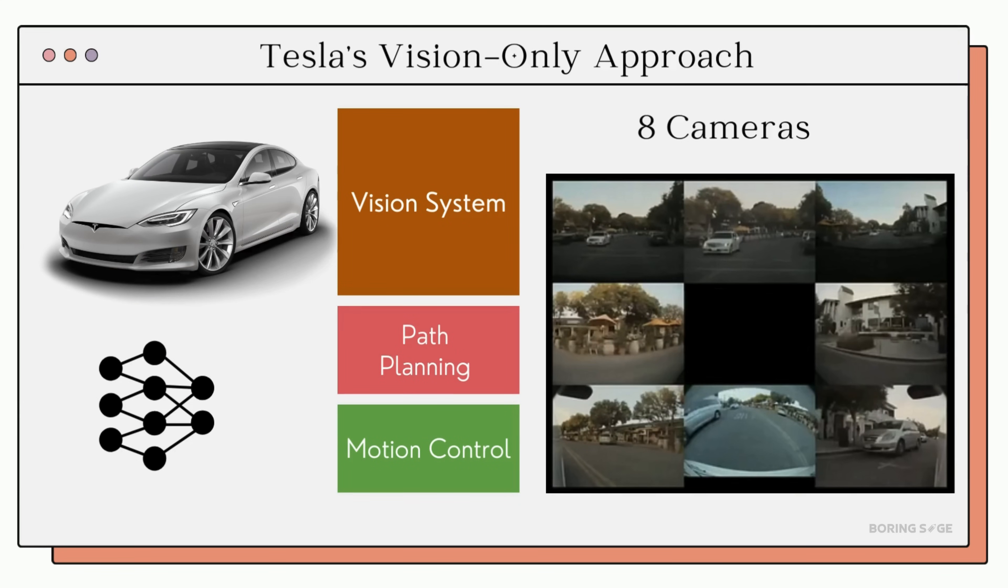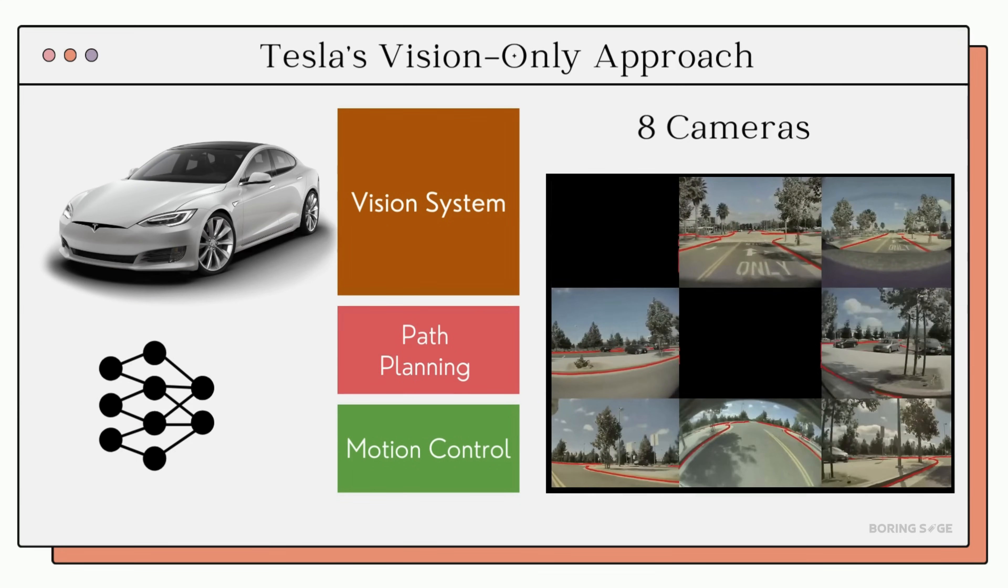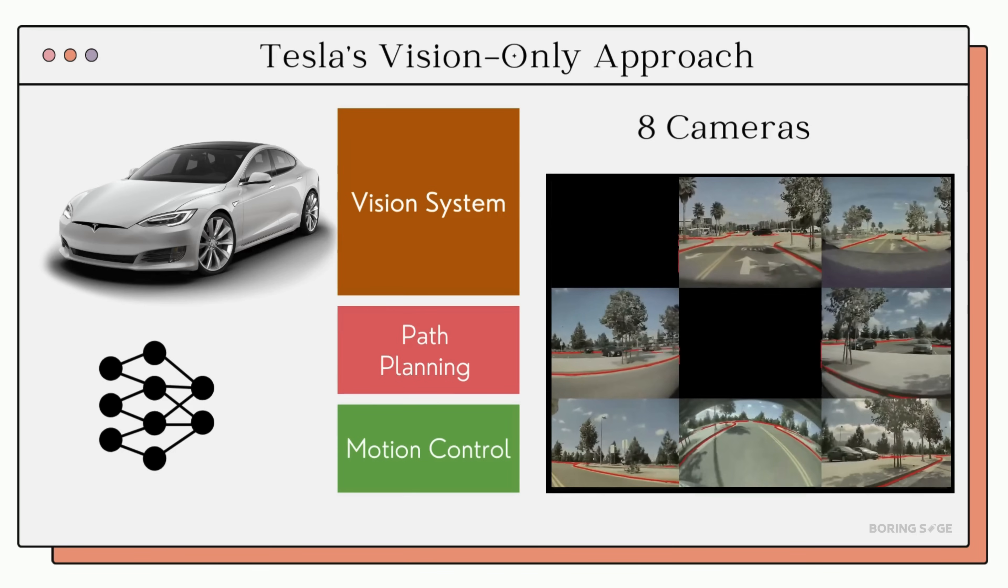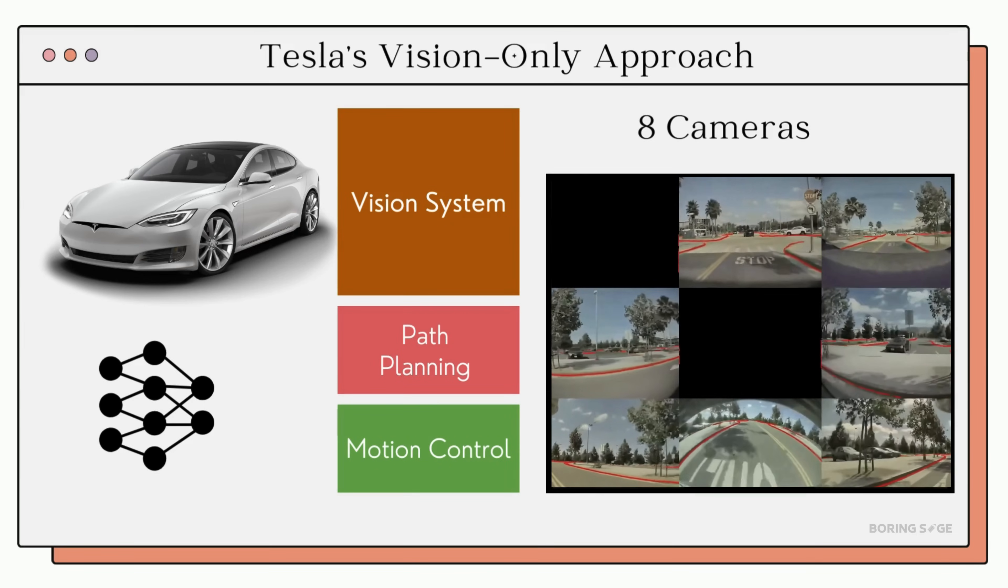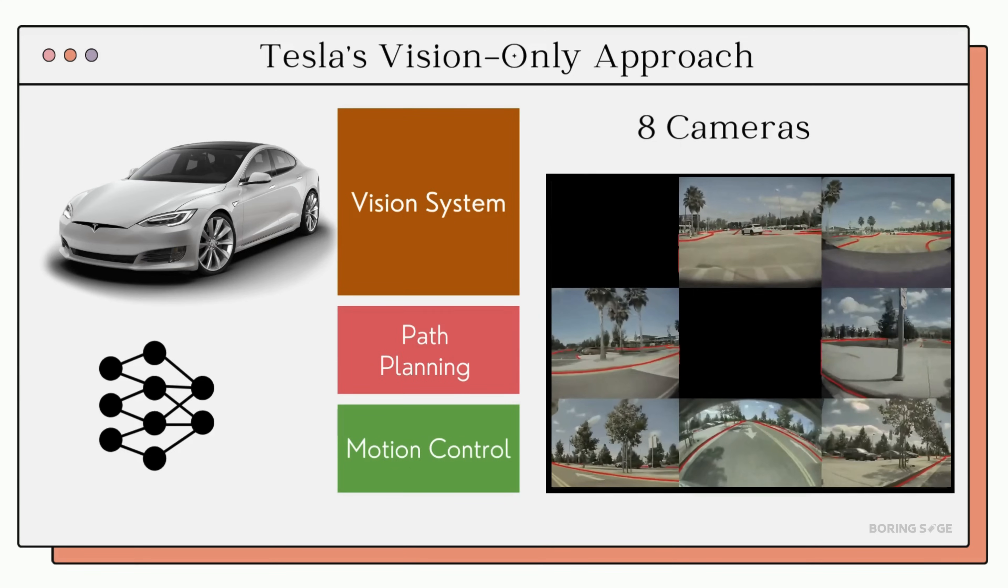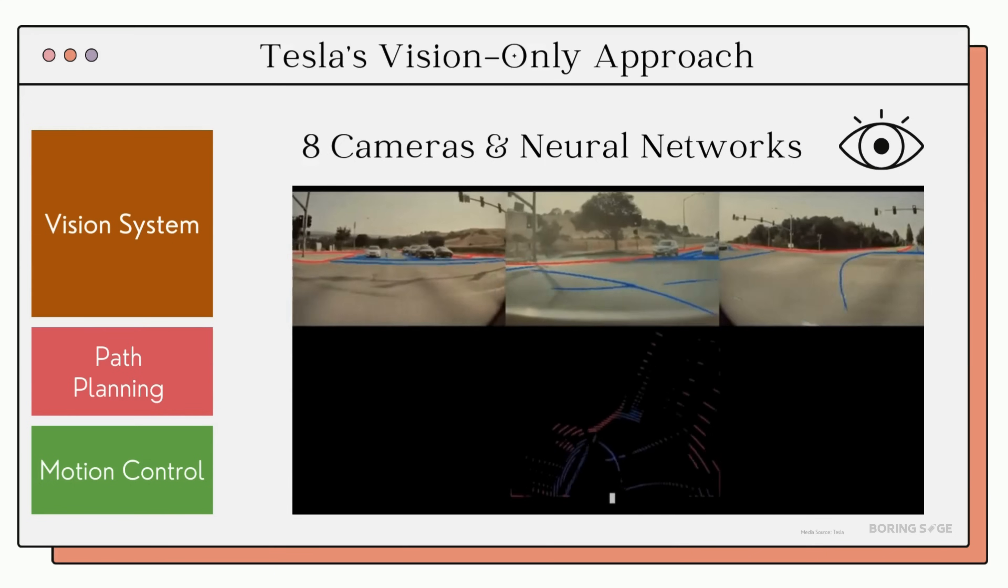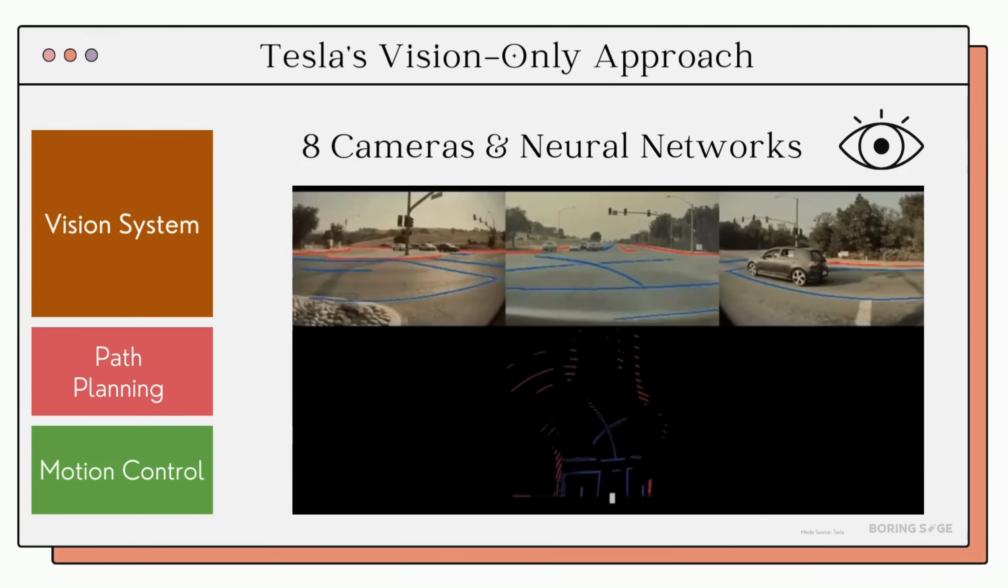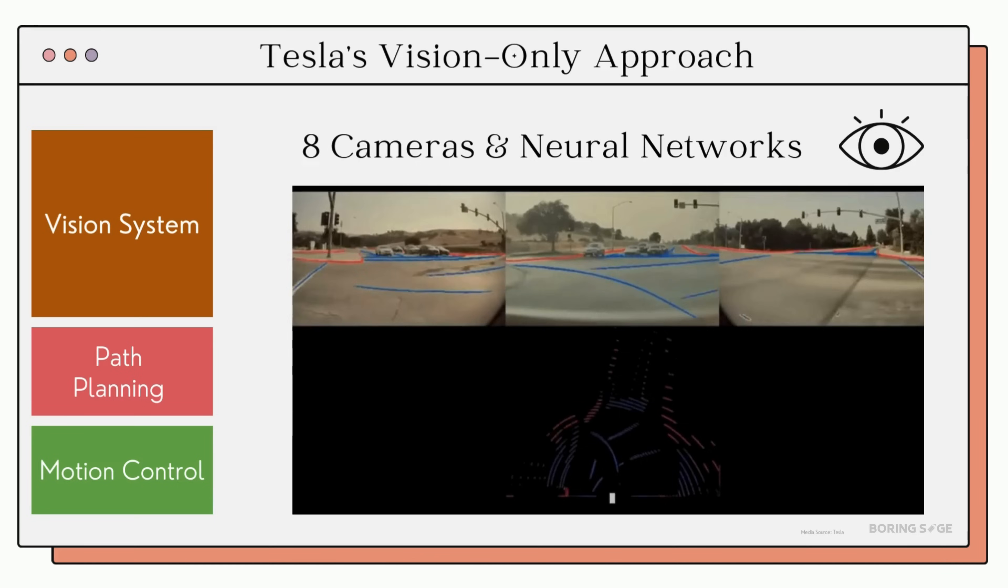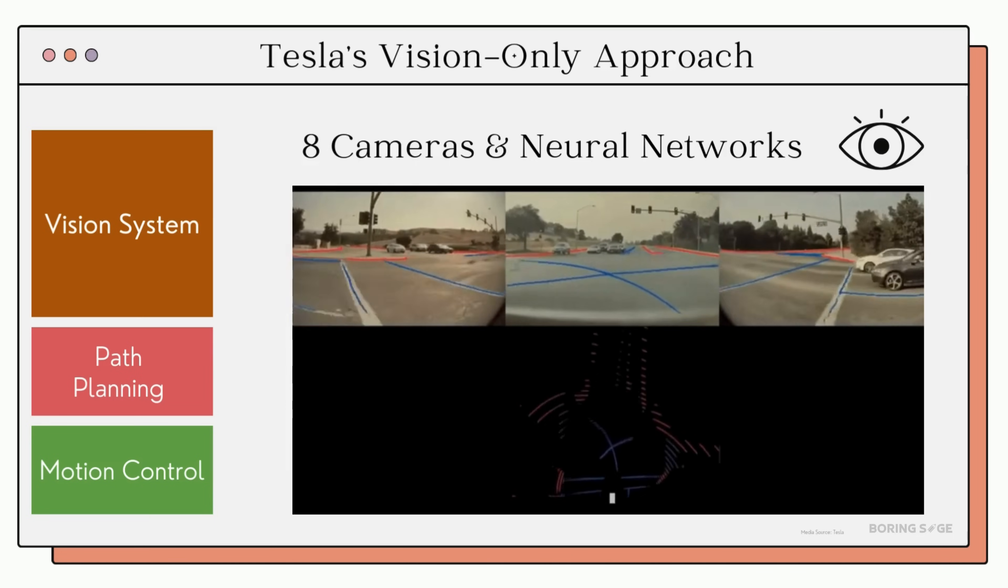The second novel component of Tesla's FSD system is its vision-only approach. Unlike its earlier models which used radars and ultrasonic sensors, Tesla now solely relies on cameras and neural networks. This strategic shift was driven by Tesla's belief that the best way to achieve a human-like understanding of the environment, much like how we navigate using our eyes, is through vision alone.